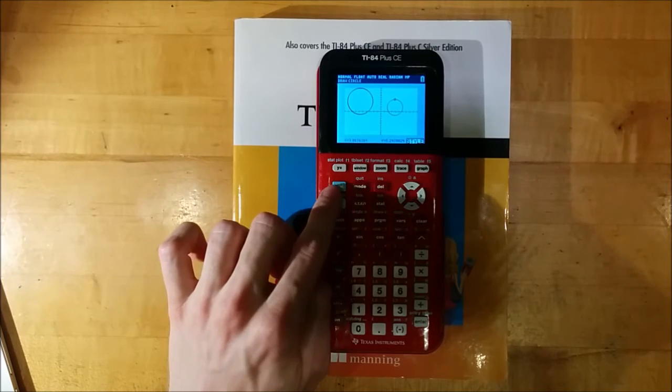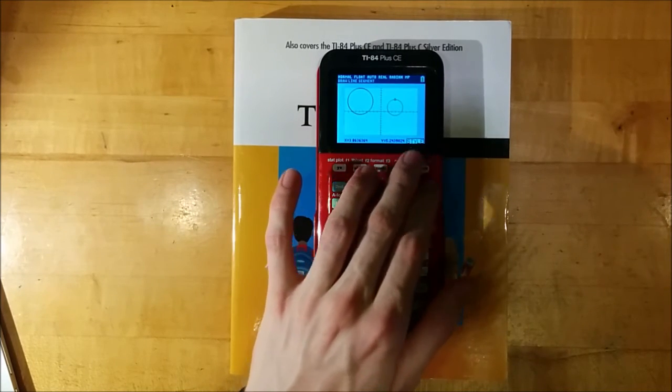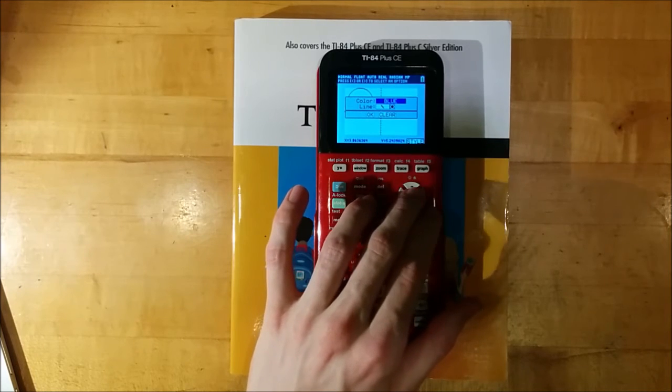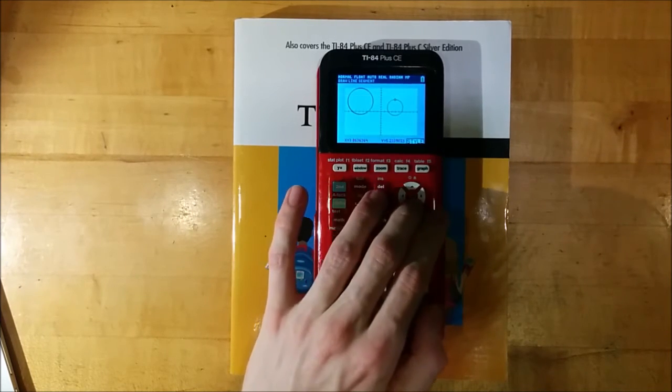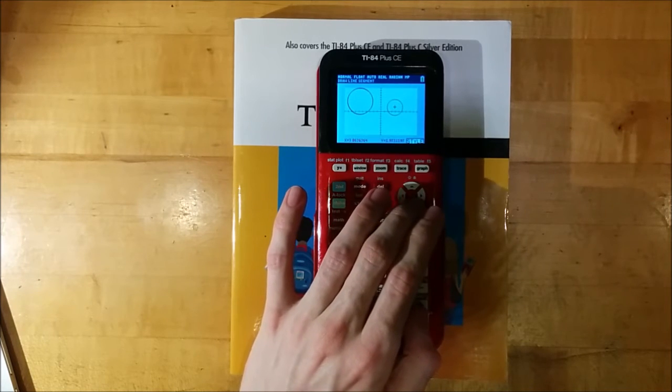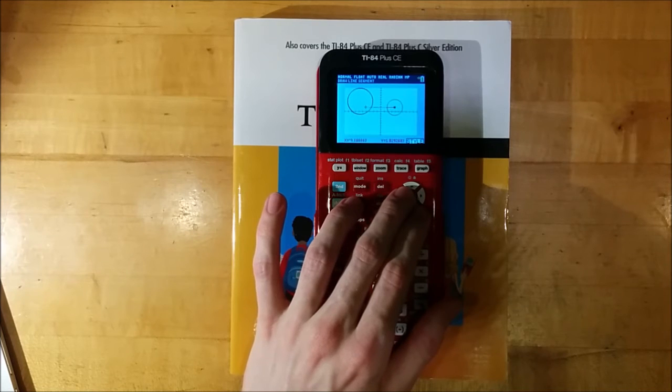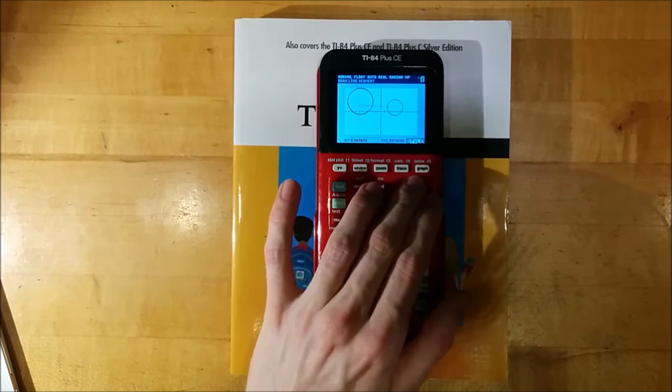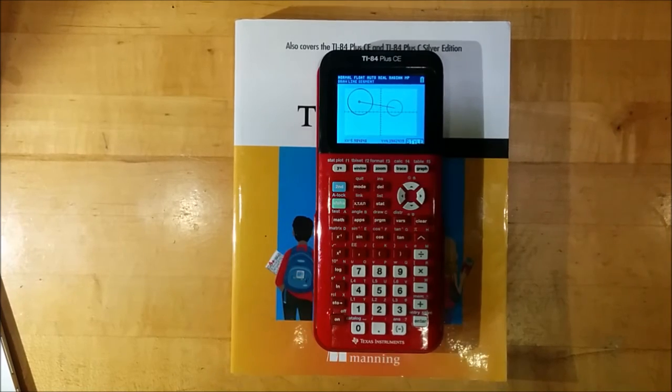Another thing I can do is return to the draw menu with second program, go down to line. Once again I could select a color and a style if I wanted, do red this time. And I will try to roughly connect the centers of these circles with a line segment. You can see that as I draw this line segment, the calculator is showing me what it's going to look like once I press enter to make it permanent. And there it is.